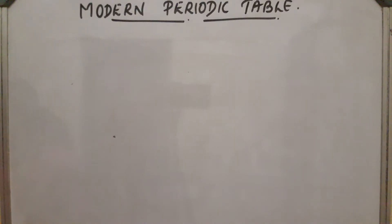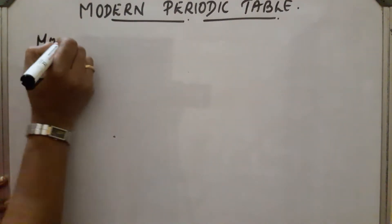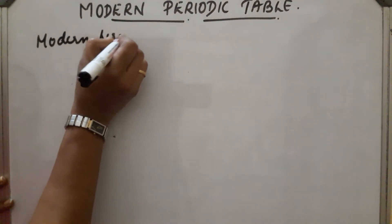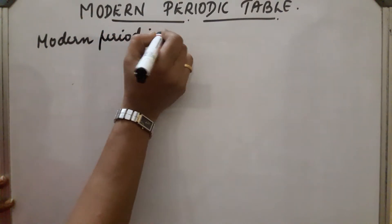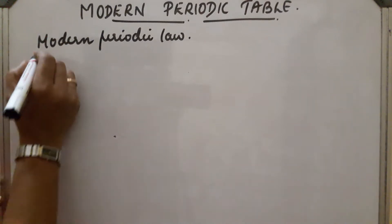Mendel's periodic law arranged elements in the increasing order of atomic masses. Due to some difficulties, a new periodic law was developed called the modern periodic law. This law states that the physical and chemical properties of the elements are periodic functions of their atomic number.